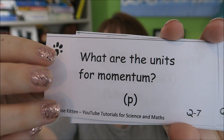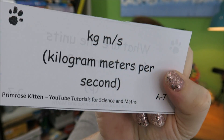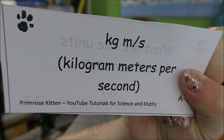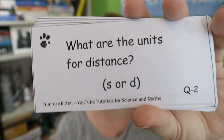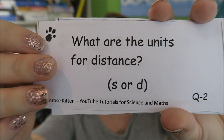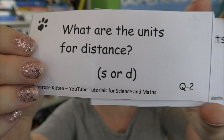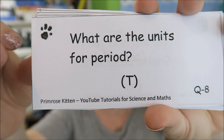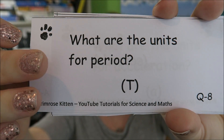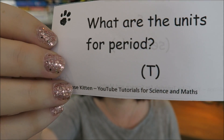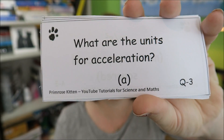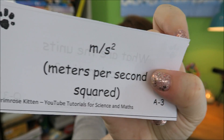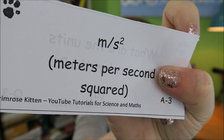What are the units for momentum? Momentum is measured in kilogram meters per second. What are the units for distance? Distance is measured in meters. What are the units for period? Period is just another time, so that's seconds. What are the units for acceleration? That is meters per second squared.